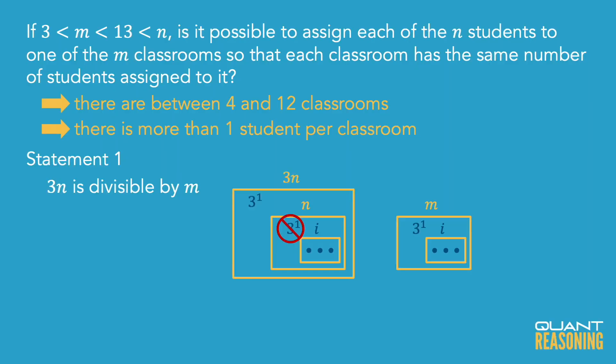We need to ask ourselves: was that extra factor of 3 that statement 1 is describing necessary? Is that the reason that 3n is divisible by m? Or would n have been divisible by m without that extra factor of 3? If the prime box of m has a 3 in it, and the prime box of n by itself didn't have a 3, then giving it that extra factor of 3 could be a game-changer. Is it possible that the prime box of m has a 3 in it? Looking at what we know about m — it has to be between 4 and 12 — yes, if m is 6, 9, or 12 it's going to have a 3 in it. In fact, if m is 9, it's going to have two 3s in it. So yes, there could be a scenario in which 3n is divisible by m, but when you take away that extra factor of 3, it's no longer divisible by m.